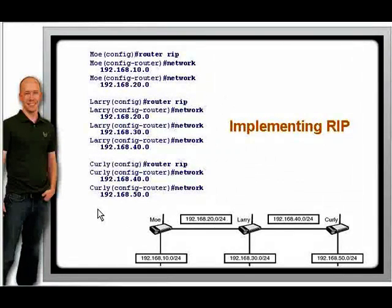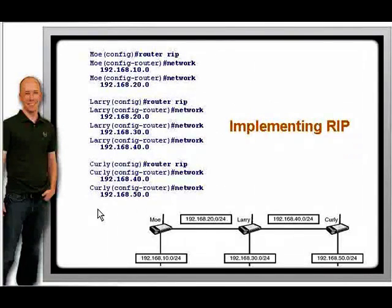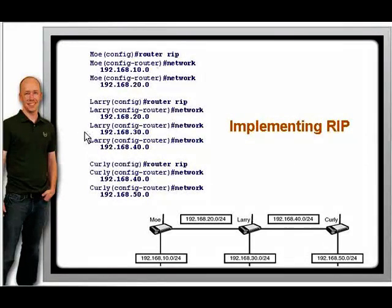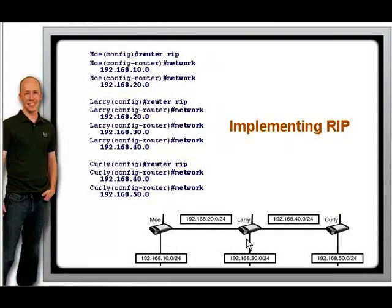All networks that you listed in your configuration are then sent out all RIP-activated interfaces. Thus, the networks that you entered on Curly's router will be sent out to Larry. Larry will take what is learned from Curly, add his own networks, and send them out to Mo. Larry will also learn networks from Mo, add his networks, and send them out to Curly.